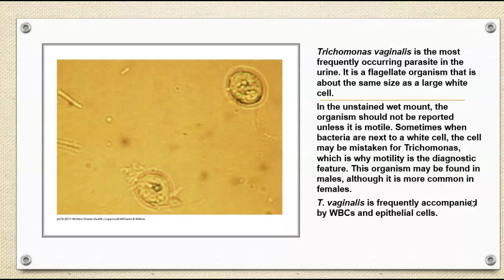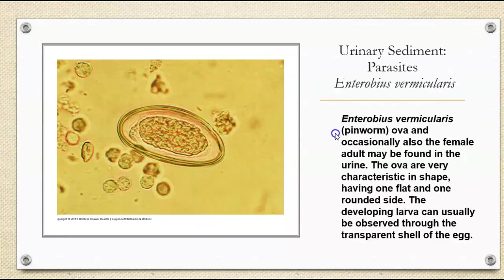Trichomonas vaginalis is frequently accompanied by white cells and epithelial cells. You do have to be careful if you're going to report this on a young child — you want to make sure you are getting this confirmed by a supervisor before you report it out, simply because this is not something that someone will accidentally acquire, and it's very concerning if a child might have that. Other parasites — Enterobius vermicularis — this is a pinworm. We can see ova and occasionally the female worm. They're very characteristic in shape — the ova has a flat side and one rounded side, and you can usually see the developing larva through the transparent shell of the egg.